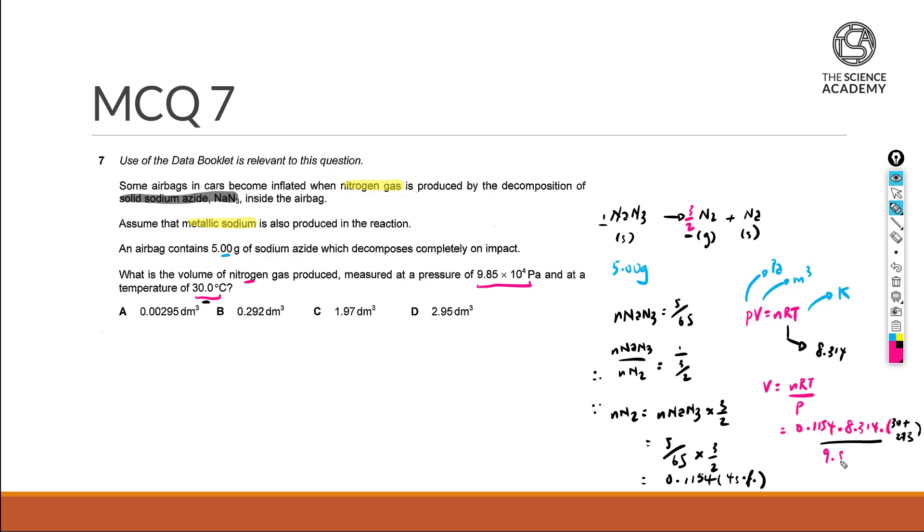And divided by the pressure, which is already at pascal, at 9.85 times 10 to the power of 4 pascal. So this will finally give us a result of 0.00295 meters cubed.